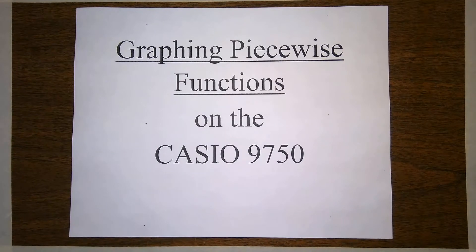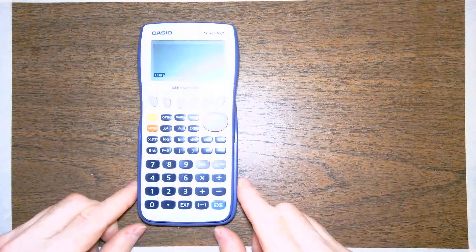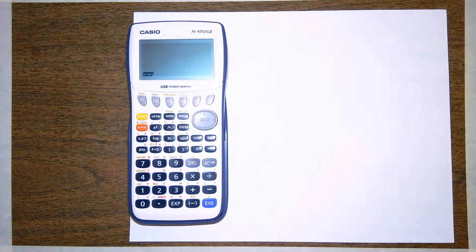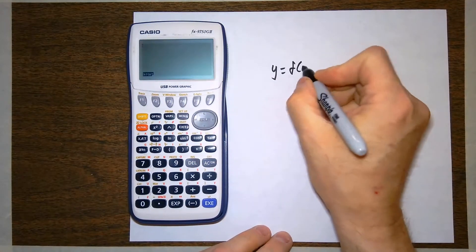Today I'm going to talk about graphing piecewise functions on the Casio 9750, the Casio graphing calculator. Here's the Casio. If I'm going to graph a piecewise function, I need to have a piecewise function. So let's consider the function y is defined as f of x,